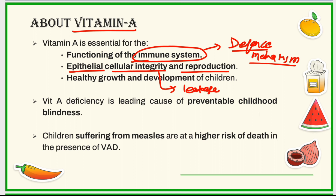Vitamin A prevents the unregulated leakage of very important materials across the barrier, which is created by intercellular adhesions as well as by the junctions between epithelial cells. Another very important function of vitamin A is that it helps in the healthy growth and development of children.